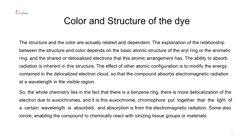Chromophore together with oxochrome means that light of a certain wavelength is absorbed from the electromagnetic radiation. Some dyes also ionize, enabling the compound to chemically react with ionizing tissue groups or materials. That happens only in adverse conditions when the excitation is too high. Otherwise, they only excite and absorb light from the electromagnetic radiation.